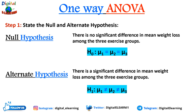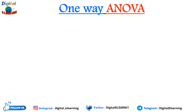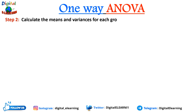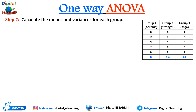Step two is to calculate the mean and variance for each group. We have data showing weight loss after 12 weeks for each group: group 1 for aerobics, group 2 for strength, and group 3 for yoga. The blue text in the table shows the group mean for each group. For group 1, the average comes to 8.